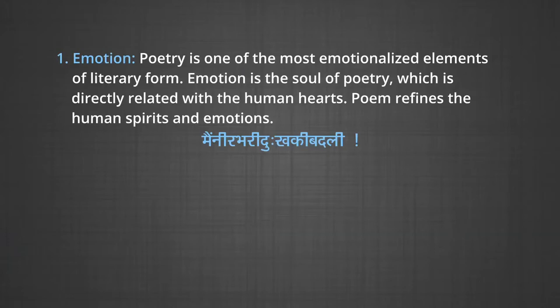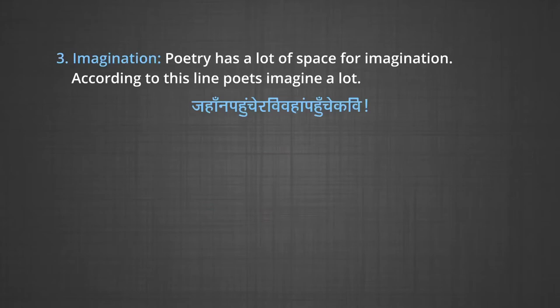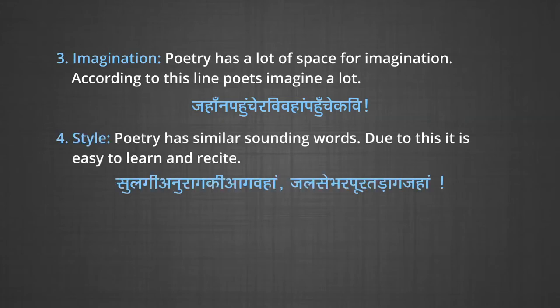Elements of poetry. Poetry has mainly four elements. First, emotion — poetry is one of the most emotionalized elements of literary form. Emotion is the soul of poetry, which is directly related with the human heart. Poem refines the human spirits and emotions. Second, intellect — poetry is an intellectual exercise; poets bring some social problems to the fore through poems. Third, imagination — poetry has a lot of space for imagination; poets imagine a lot. Fourth, style — poetry has similar sounding words, due to which it is easy to learn and recite.